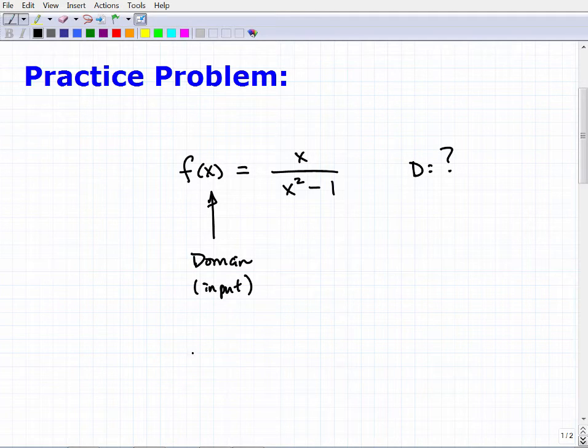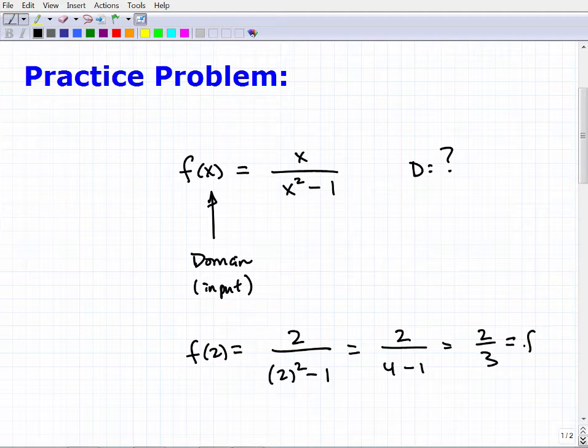For example, if I wanted to find f of 2 of this particular function, everywhere I would see x, I would replace it with 2, right? So I would have 2 over 2 squared minus 1. And we can simplify that further. That's 2 over 4 minus 1 or 2. 4 minus 1 is 3. So f of 2 of this function is 2 thirds.